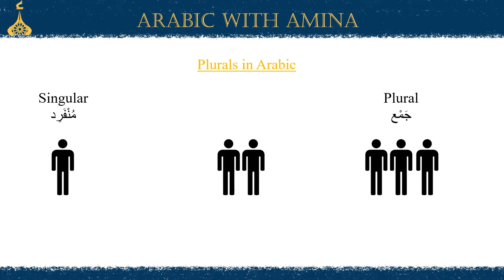First of all, it's important to know whether the word you're talking about is masculine or feminine. If you don't know what I'm talking about, please check out the masculine and feminine words video first. Now, in Arabic there are three patterns of plurals. The first is jama' mudhakkar salim, which is sound masculine plurals — as implied from the name, this applies to words that are masculine. The second type is jama' mu'annath salim, which is sound feminine plurals, and again this applies to feminine words. And then there's a third pattern called jama' taksir, or broken plurals. This pattern doesn't really follow any rules, and so it is called broken or sometimes called irregular.